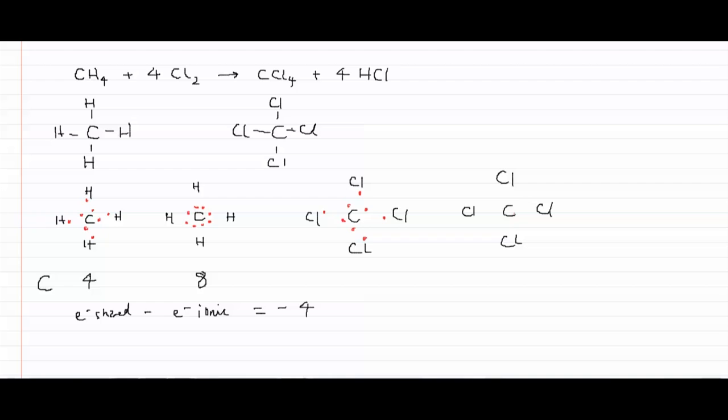Under the ionic model now, remember, we're distributing to the most electronegative element, and chlorine is a lot more electronegative than carbon. So now the valence electrons are all being associated with the chlorines and not with the carbon, like so.